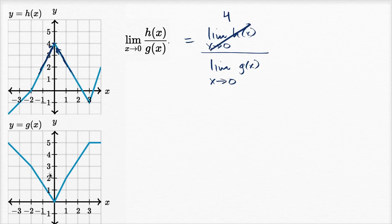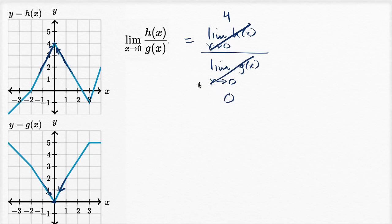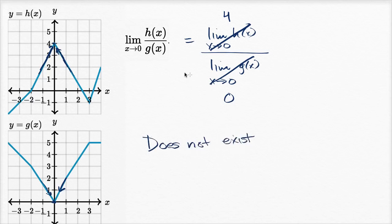For g(x) as x approaches zero: from the left the function approaches zero, and from the right it also approaches zero, which is also g(0). That makes sense since g is continuous. So the denominator is zero. Now we're in a strange situation — we have four divided by zero. This limit does not exist because we can't divide four by zero. Even though both individual limits exist, we cannot divide by zero, so the entire limit does not exist. If you were to plot h(x)/g(x), you would see it even clearer graphically.